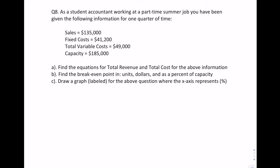Question number eight: as a student accountant working at a part-time summer job, you have been given the following information for one quarter of time. We have sales given in dollars, fixed costs given in dollars, total variable costs, and capacity — all in dollars.